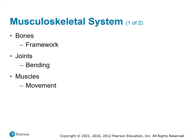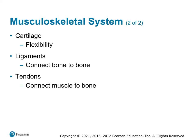Based on the name, we know it includes muscles, joints, and bones, providing the framework, the bending, the movement, ensuring that we are the people that we are. You have cartilage that provides flexibility between the bones, like your nose, your ears, cartilage between the ribs and the sternum. You've got ligaments that connect bones to bones, and you've got tendons that connect the muscles to the bones. So all pieces come together to help us form the musculoskeletal system.